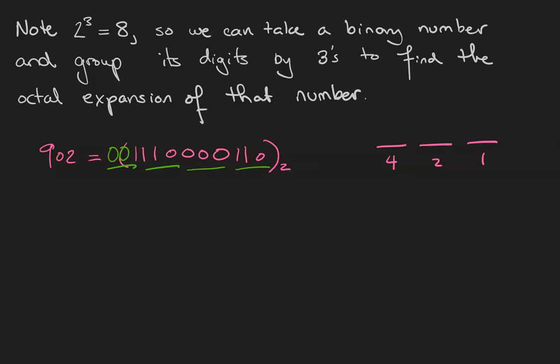So 1 1 0 is 4 plus 2, which is 6. 0 0 0 is 0, 1 1 0 is another 6, and 0 0 1 is 1. So the octal expansion of the number 902 is 1606.